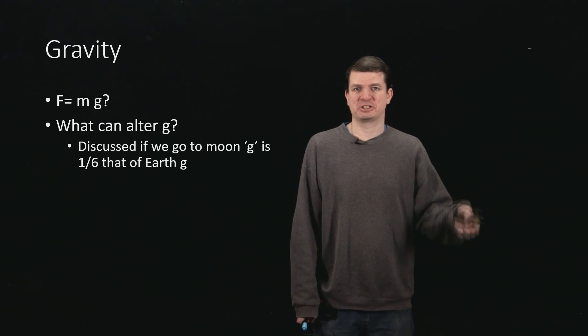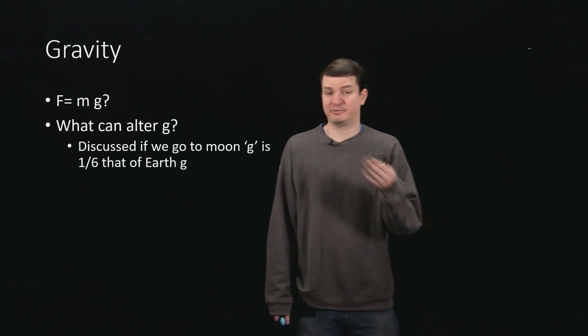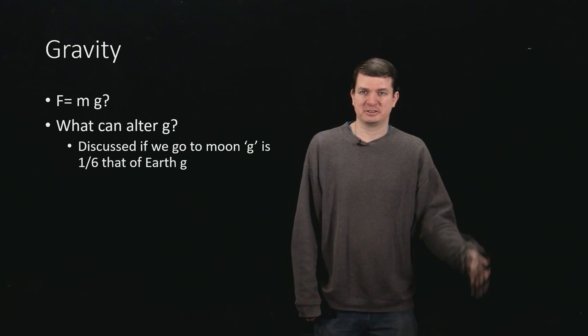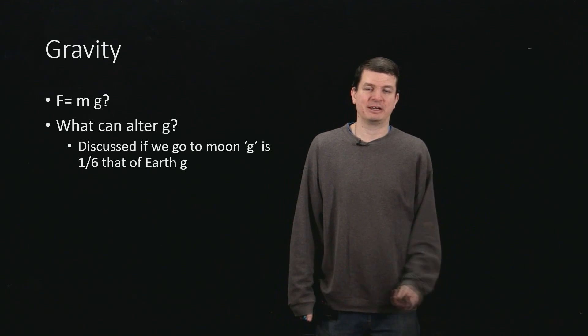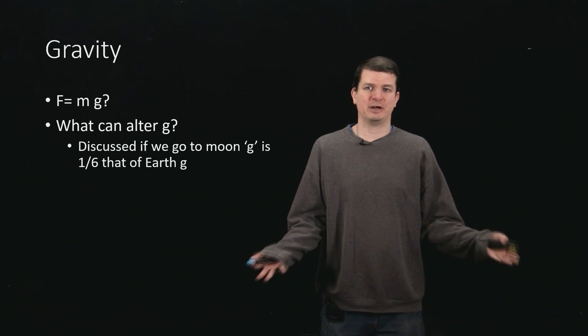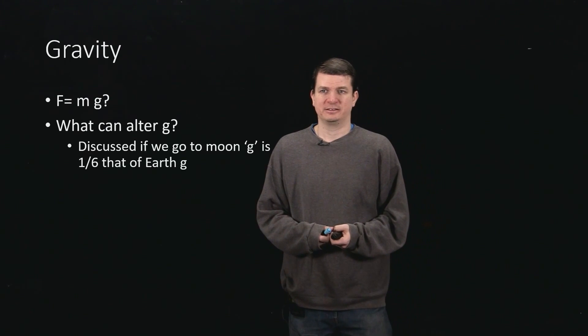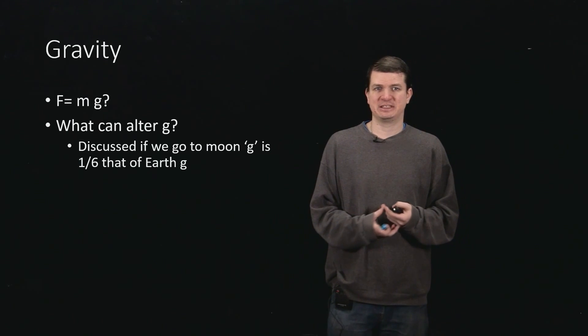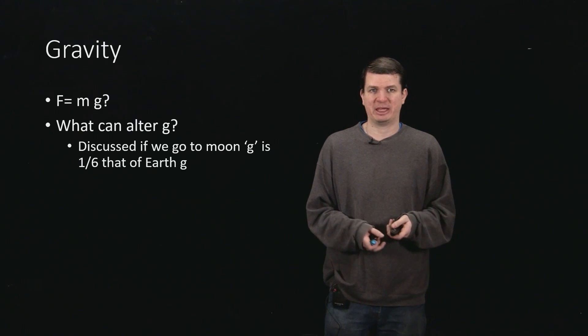So g can change depending on where you are, and in fact in various practice you'll know that there's uncertainties in g which come from variations even around the earth. So how exactly is g supposed to be? How do we understand that it's actually changing? What does it depend on?